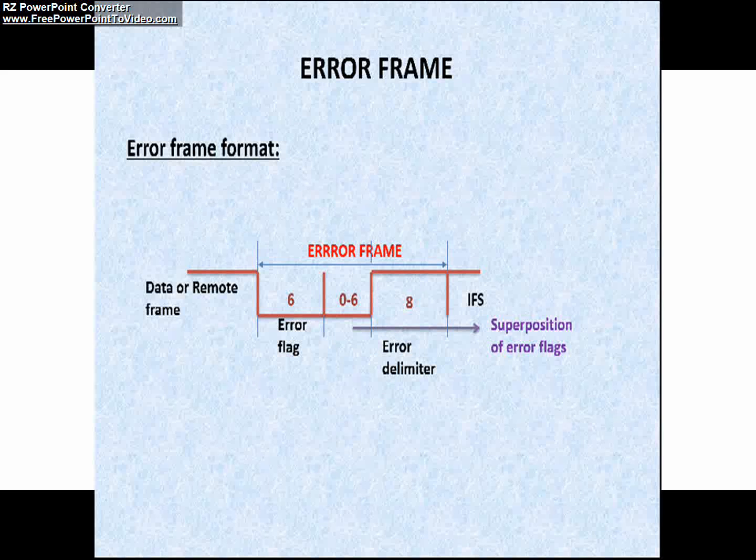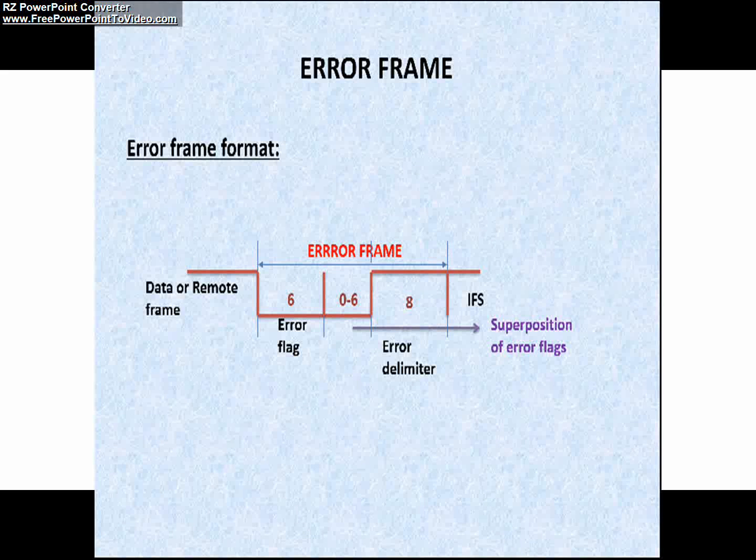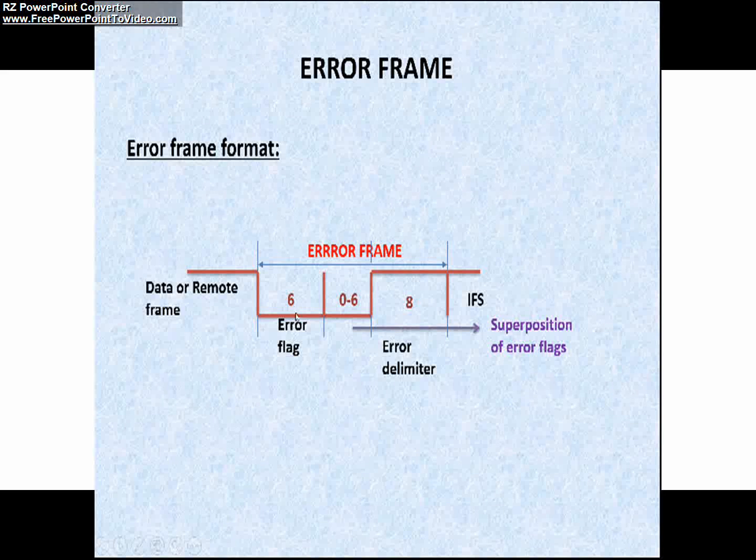I hope now you all know an error frame is generated by a node that detects an error in CAN network. The error frame consists of different fields, an error flag field, superposition of error flags, followed by an error delimiter. The same you can see in this picture, the error flag field and the superposition of error flags and the error delimiter.